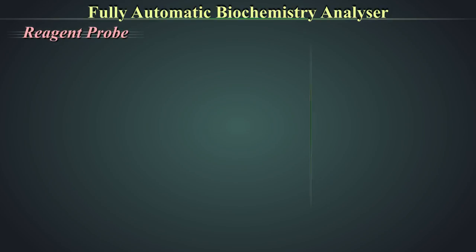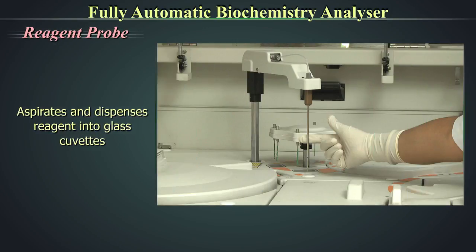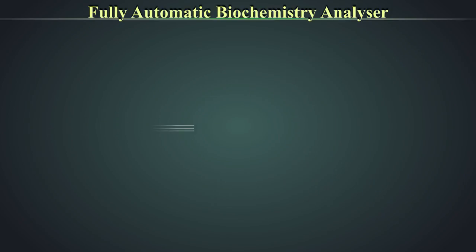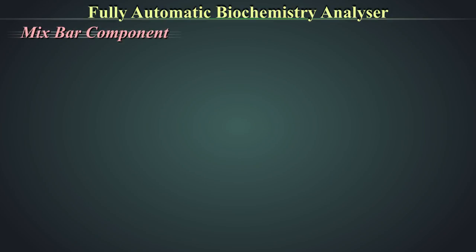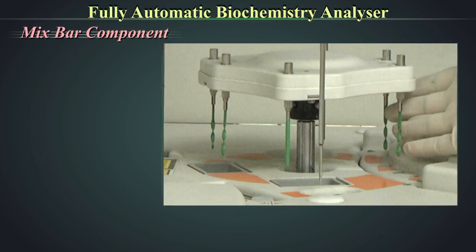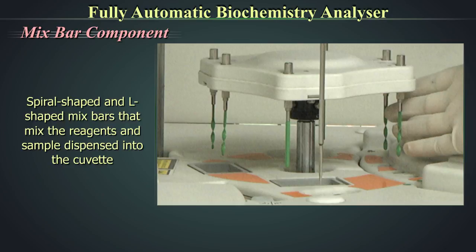The refrigerated compartment houses reagents to ensure their integrity. The reagent probe aspirates and dispenses reagent into glass cuvettes located in the cuvette wheel. The mix bar component houses spiral-shaped and L-shaped mix bars that mix the reagents and sample dispensed into the cuvette.